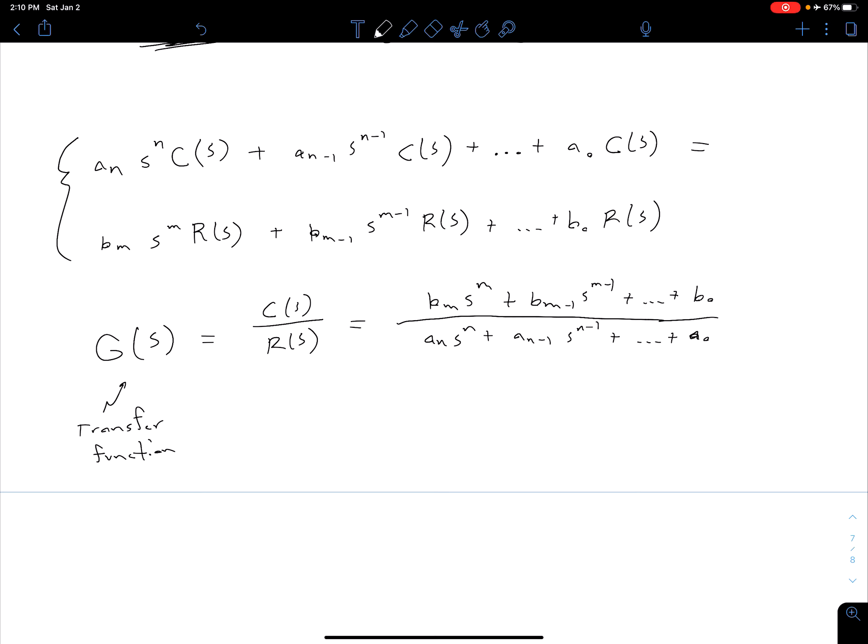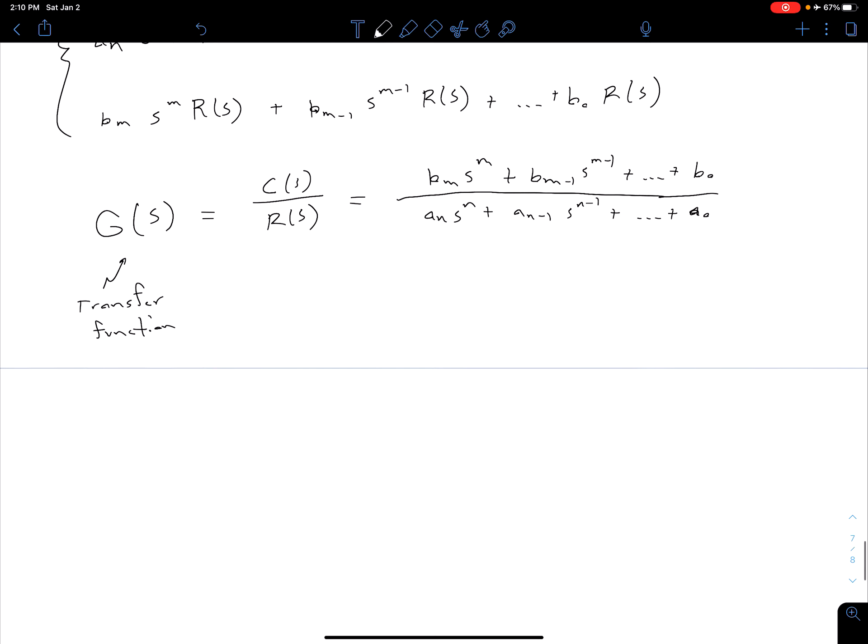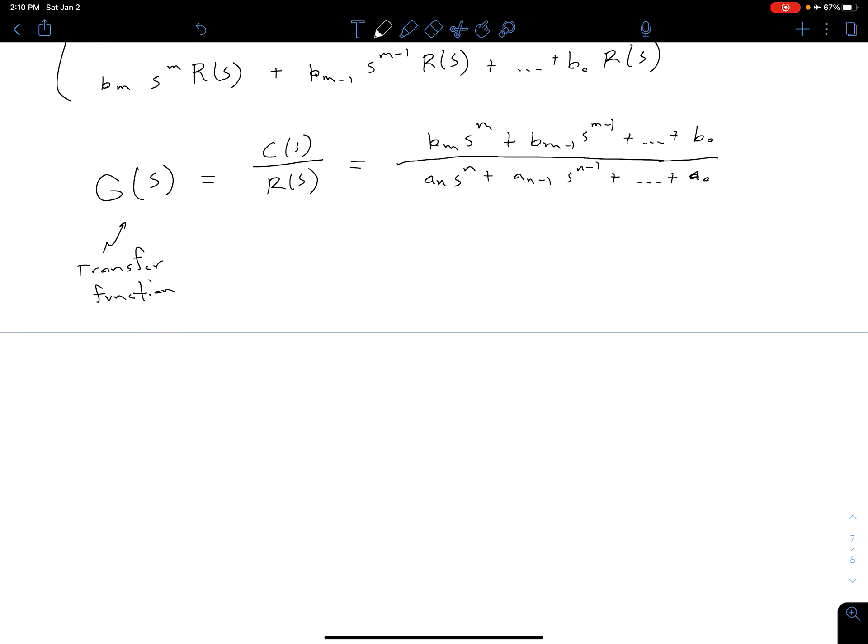Okay, so again G(s) is our transfer function and so one thing that's important to note, and I mentioned this a couple times before, is now we can say that C(s) is equal to G(s) times R(s).